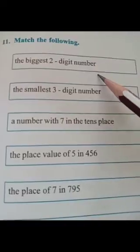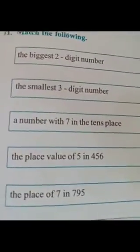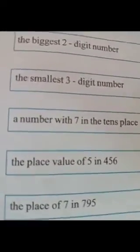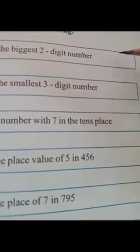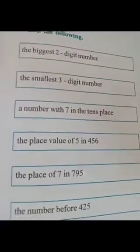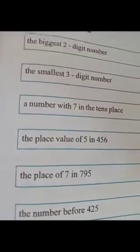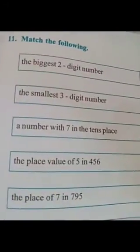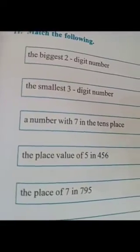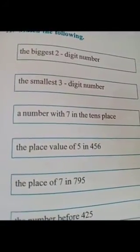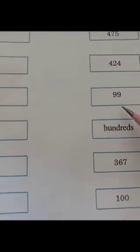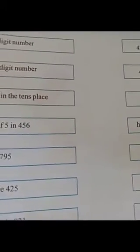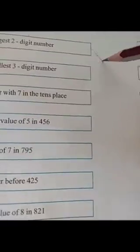The biggest two digit number — what is the biggest two digit number, children? In previous class we already said this in this chapter starting. Biggest two digit number — what is that? Ninety-nine. Ninety-nine is the biggest two digit number.